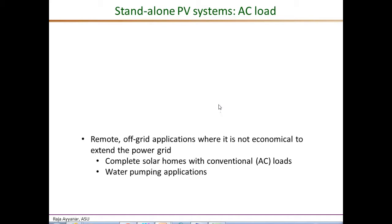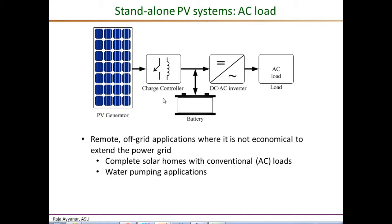Then we have standalone PV inverters supporting the more common AC loads. Applications could be any off-grid load — for example, in remote places it may be more economical to support the entire load through PV systems rather than extending the power grid. The configuration once again requires battery energy storage and a charge controller. The PV or battery DC voltage is converted to sinusoidal AC voltage through a DC-to-AC inverter, which maintains the voltage magnitude and frequency within the limits required by the AC loads.